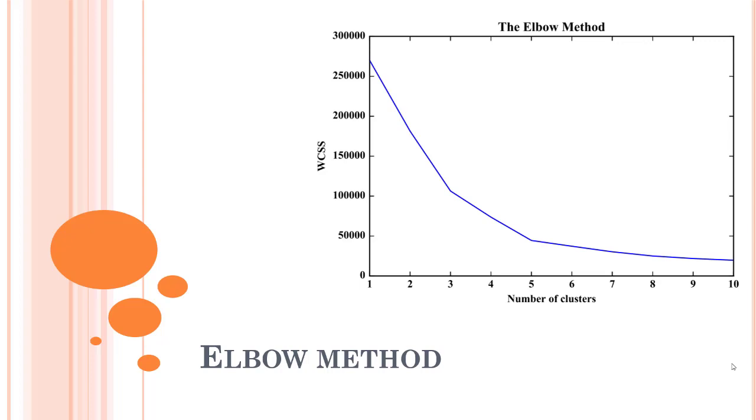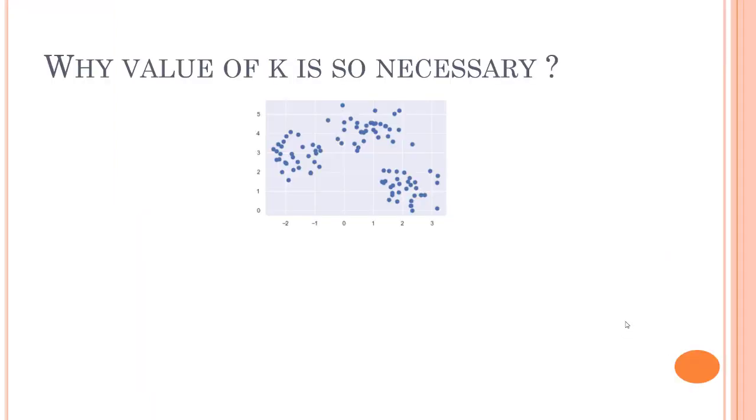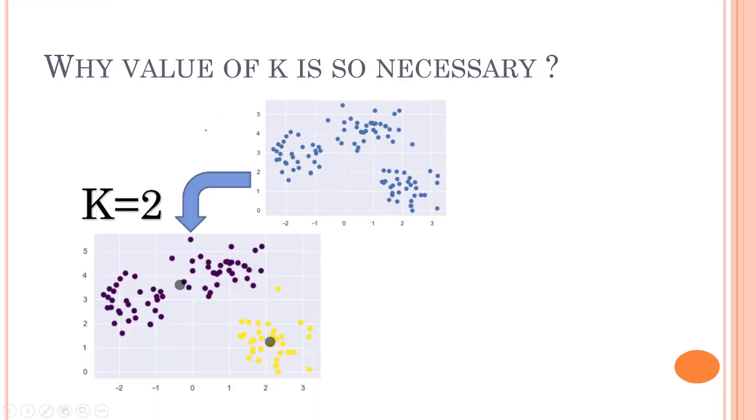But before that, let's look into what might happen if we use a different k value. So we have this model where, for k equals to two, if we train a k-means clustering model with k equals to two, you can see that we have two clusters. But if you look into the data right now, we are having two dimensional data, so it's quite easy to see that k equals to two is not a good value.